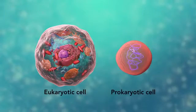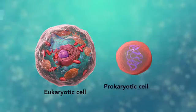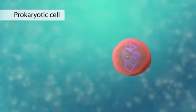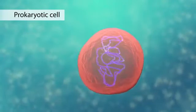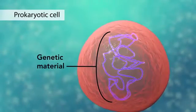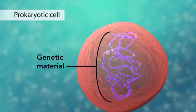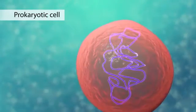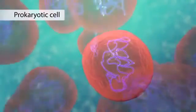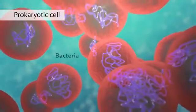The second category is prokaryotic cells. They don't have a nucleus or membrane enclosed organelles. They do have genetic material but it's not contained within a nucleus. Prokaryotic cells are always one-celled or unicellular organisms such as bacteria.